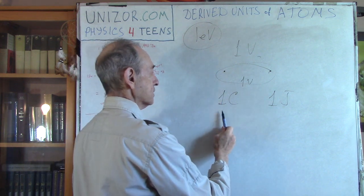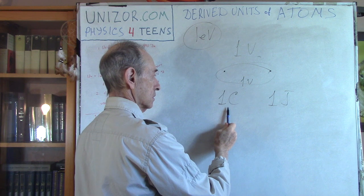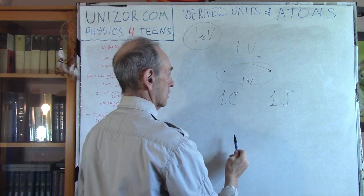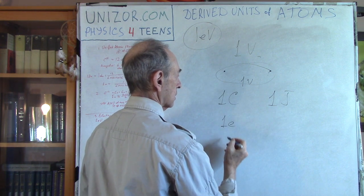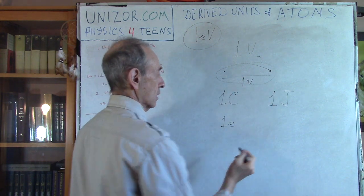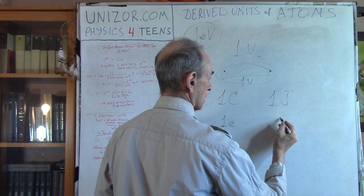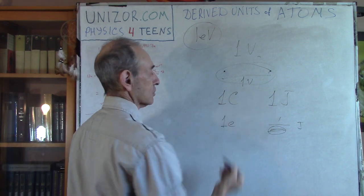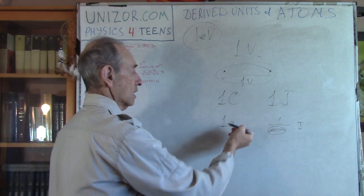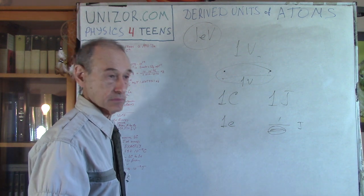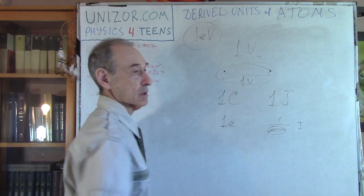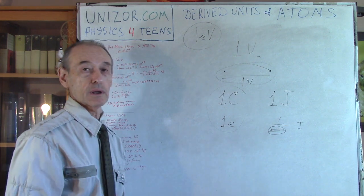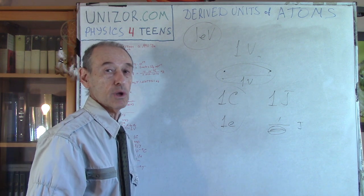So if we move one Coulomb across one volt difference, we spend one Joule of energy. If we move one electron across the same distance, we will have something like a fraction of Joule. What is the fraction? Well, the fraction is how many electrons are in one Coulomb, right? We are reducing the electric charge by certain factor, which means we have to reduce the work by the same factor. So what is this factor? How many electrons are in one Coulomb?